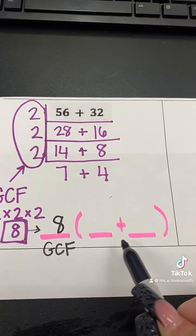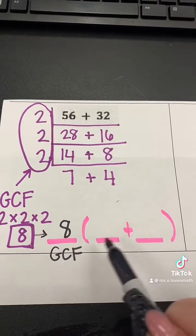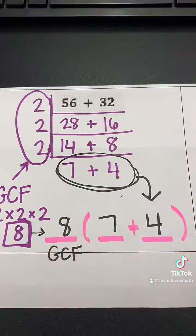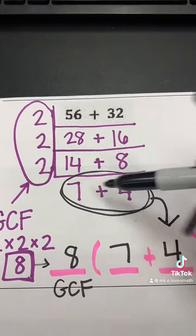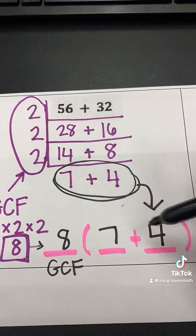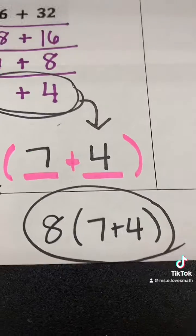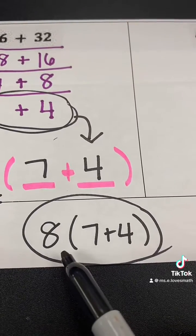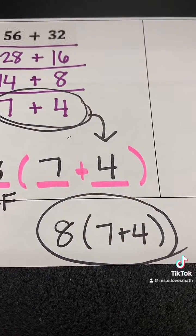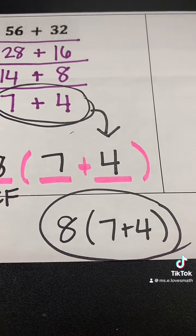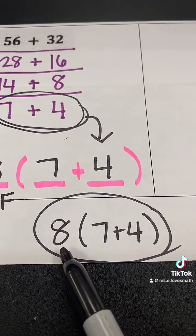GCF is 8. And if you notice, when we filled out our ladder, we already have two numbers being added together. These two numbers right here at the bottom of our ladder are the two numbers we use in our expression. So our final answer is 8 parentheses 7 plus 4. That is an equivalent expression rewritten using the distributive property and the GCF.